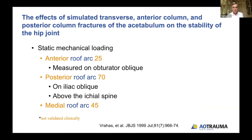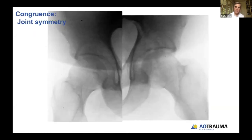There is some controversy about this. A study from Mark Vrahas looked at transverse fractures in cadaver specimens under load. They found the anterior roof arc could be as low as 25 degrees, while the posterior may need to be as much as 70 degrees. This was not validated clinically, but it suggests that the posterior roof arc might be more important than the anterior roof arc in some situations.